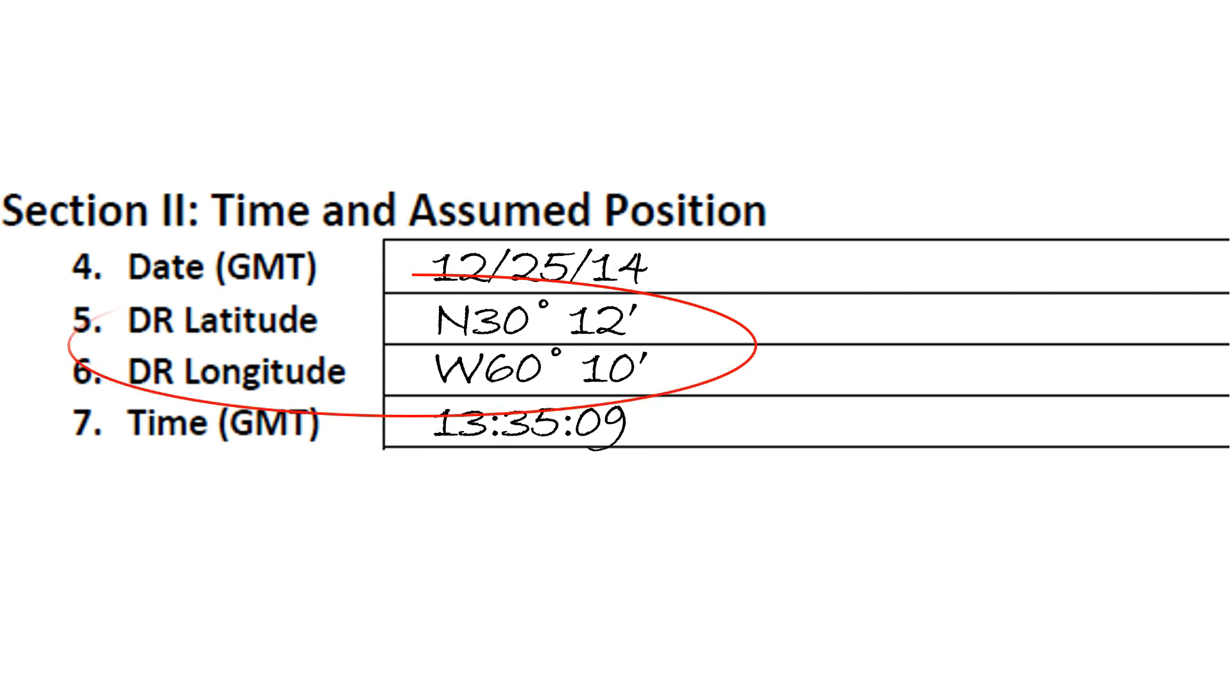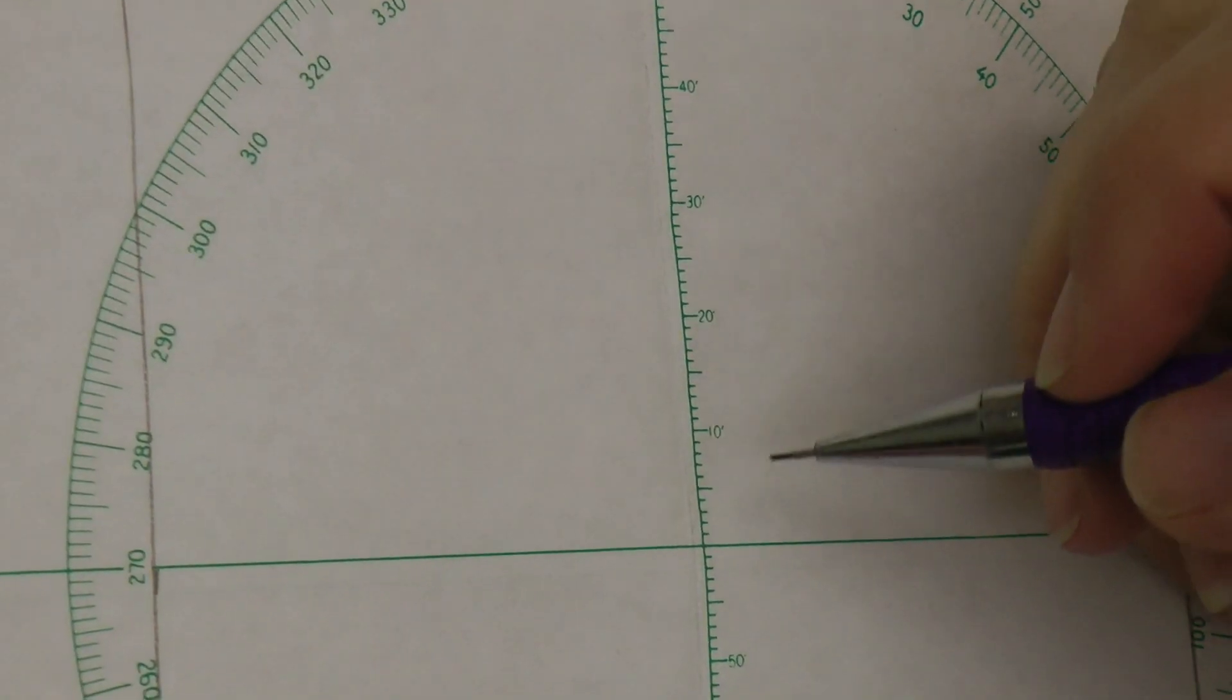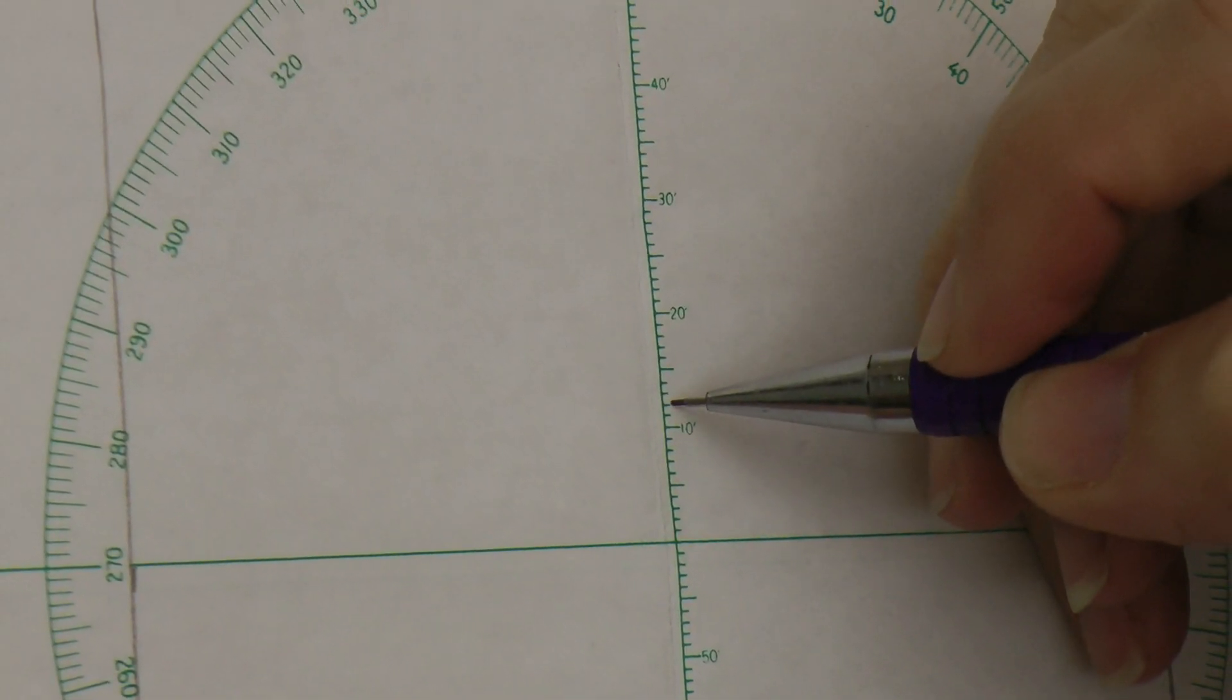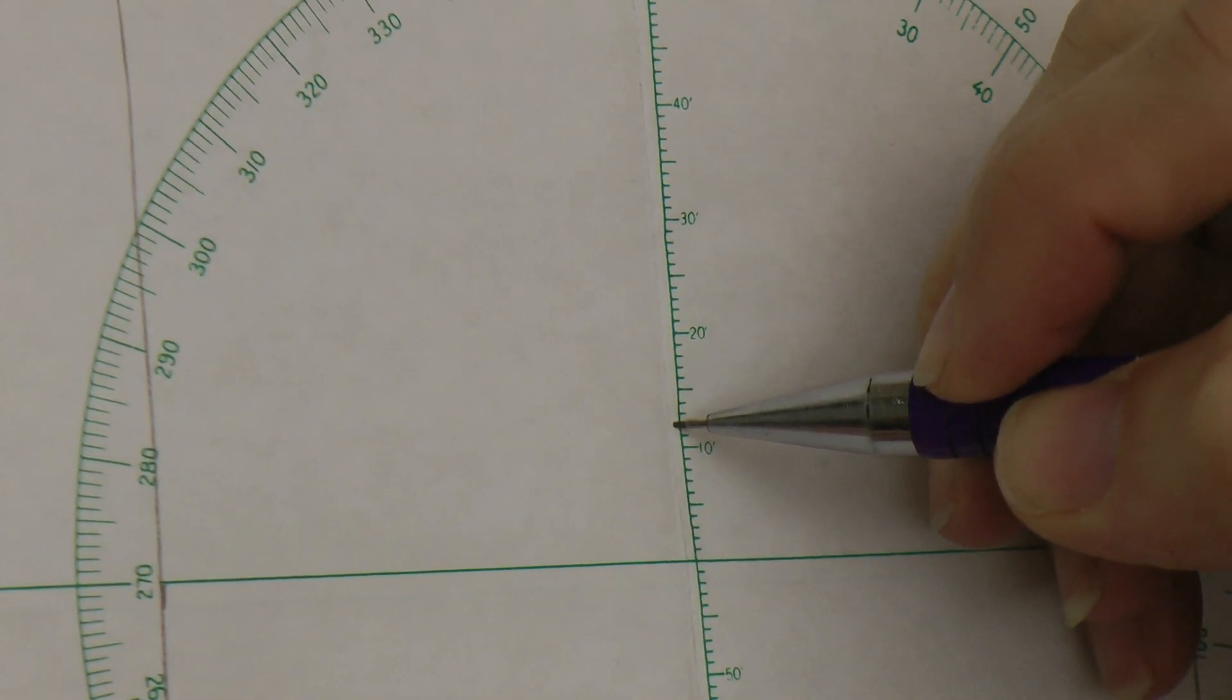Let's say our dead reckoning is 30 degrees north and 12 arcminutes, and 60 degrees west and 10 arcminutes. For latitude, remember the angle increases as we go north, so our latitude coordinate is north of degree 30. Using the scale along the center line of the page, we put a mark at 12 arcminutes above 30 degrees north.